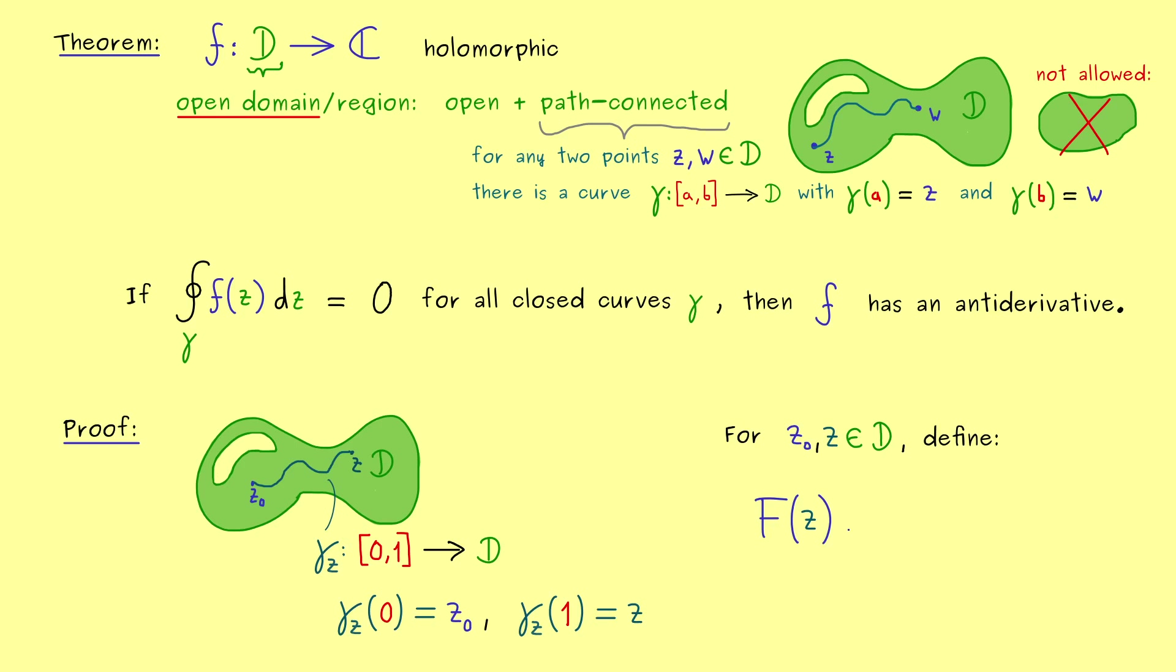Indeed, we can just set F to be the contour integral. So we use our curve gamma_z and we integrate the function f. However, now at this point, we have to do something which is common in complex analysis. Namely, we need a new variable for the integration.